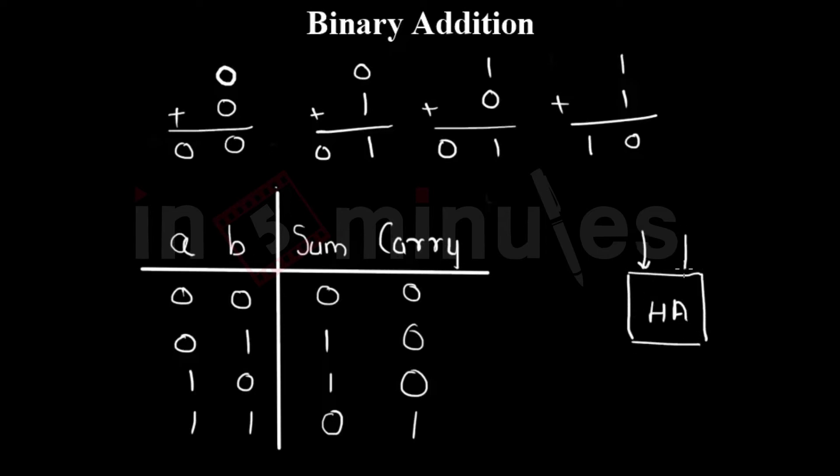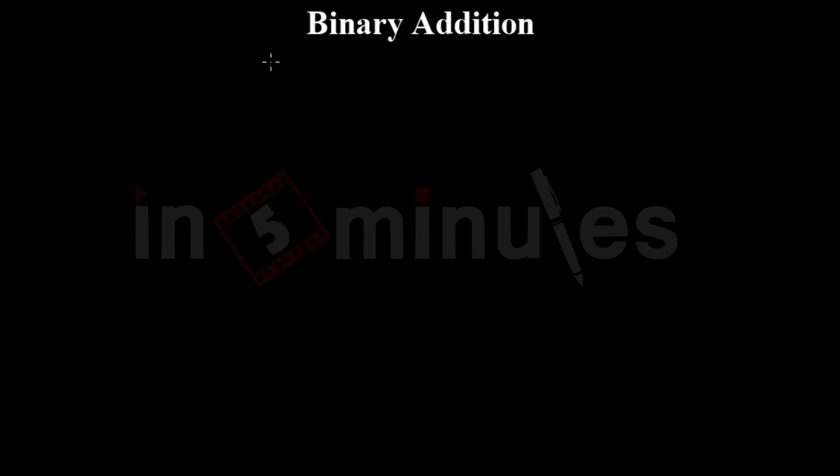It takes two inputs A and B and it produces sum and carry. So for single bit addition the circuit used is half adder. Please go through the truth table again and see how sum and carry are generated.